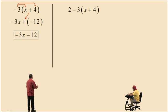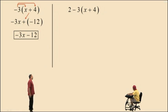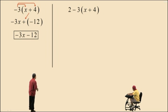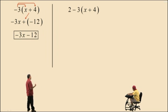Now we have 2 subtract 3 times the quantity x plus 4. This gets tricky. Notice you have a subtraction and a multiplication. The 3 outside of the parentheses means you have to multiply. Order of operations says you have to multiply first. So we're going to take 3 times x plus 4, but in order to multiply we have to apply the distributive property.